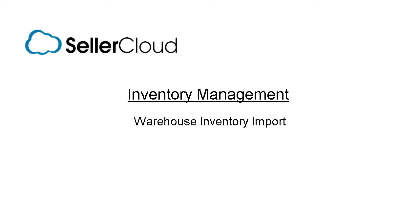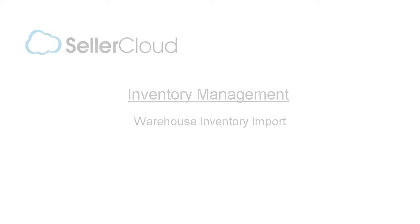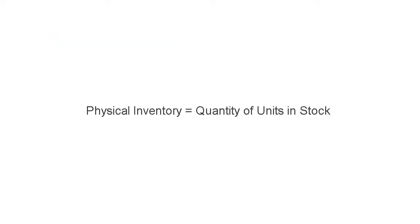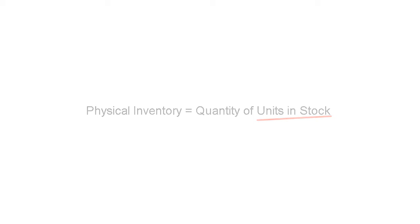In this tutorial, we'll demonstrate how to set the physical inventory on multiple products using a file import. Remember, the physical inventory refers to the quantity of units in stock for each individual product. The physical quantity is not necessarily the amount of units available for sale.